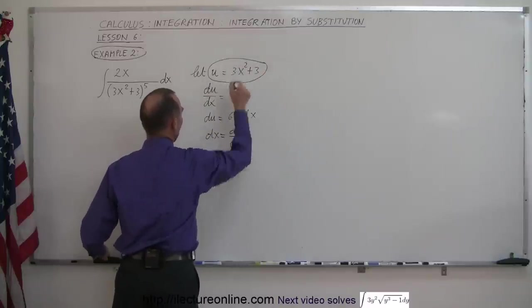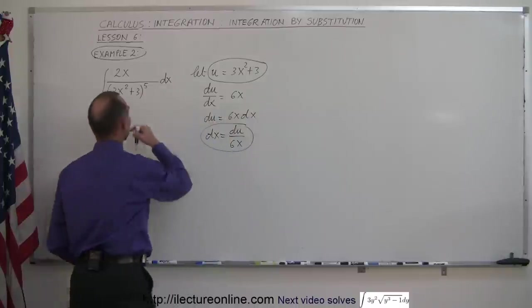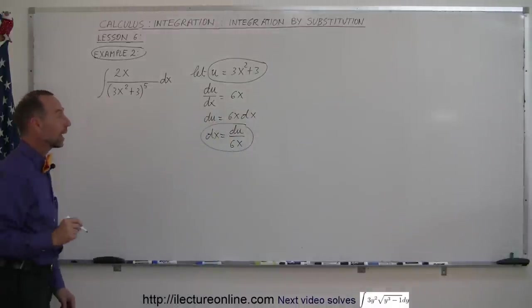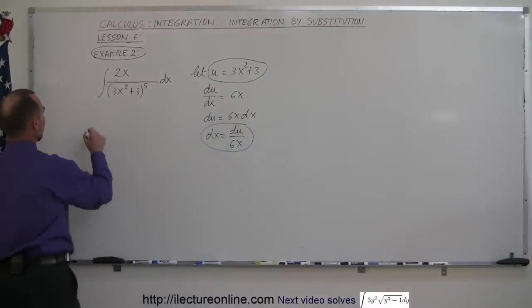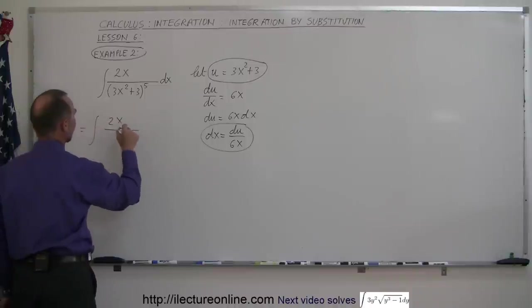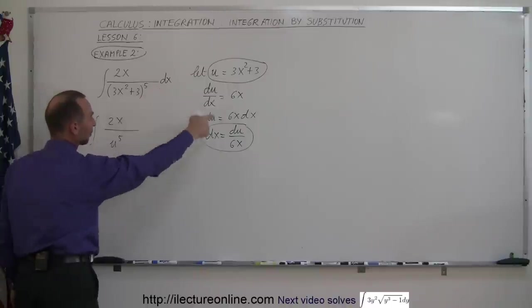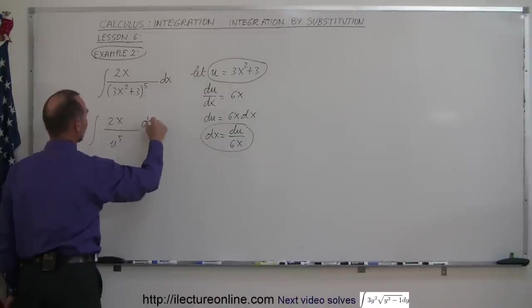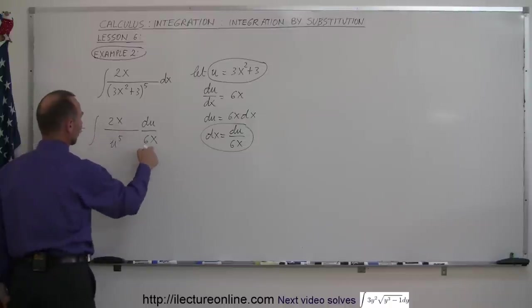And then we substitute this and this into our integral. Let's see what happens when we do that. So this becomes the integral of 2x divided by... This now becomes u, so u to the 5th power and dx can now be replaced by du over 6x. And notice that this x and this x cancel. That was the whole object of doing that.